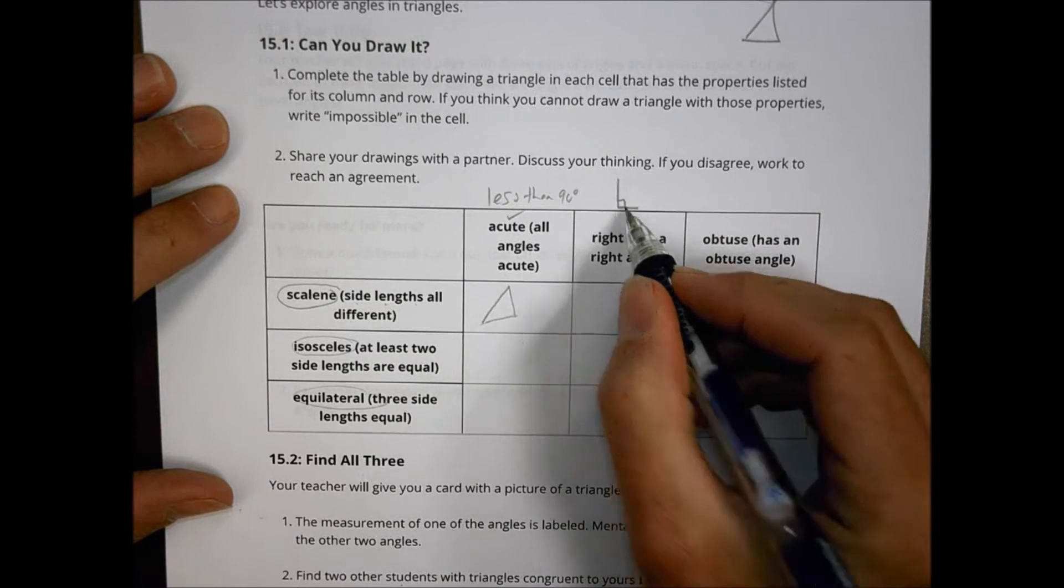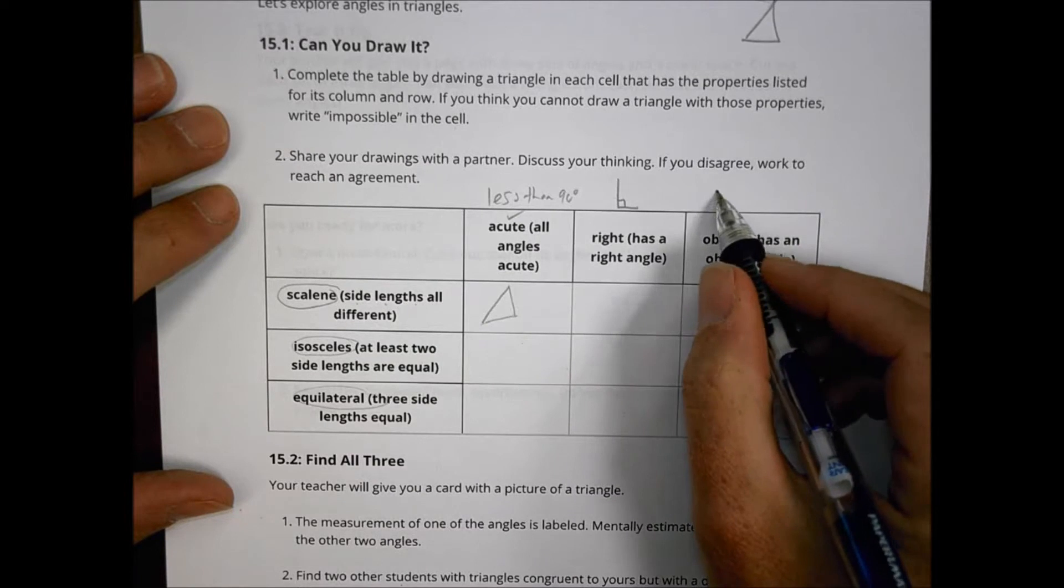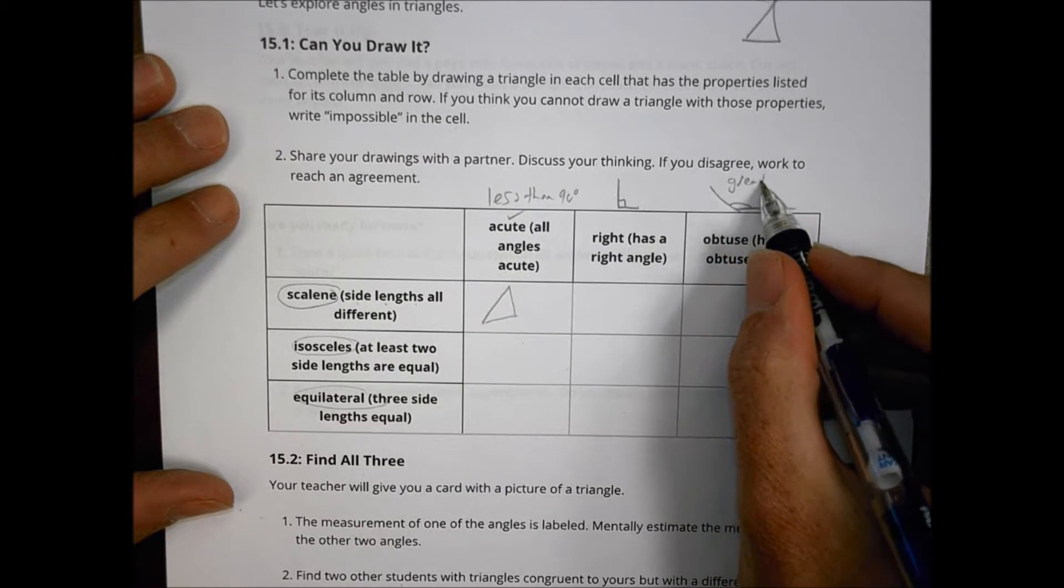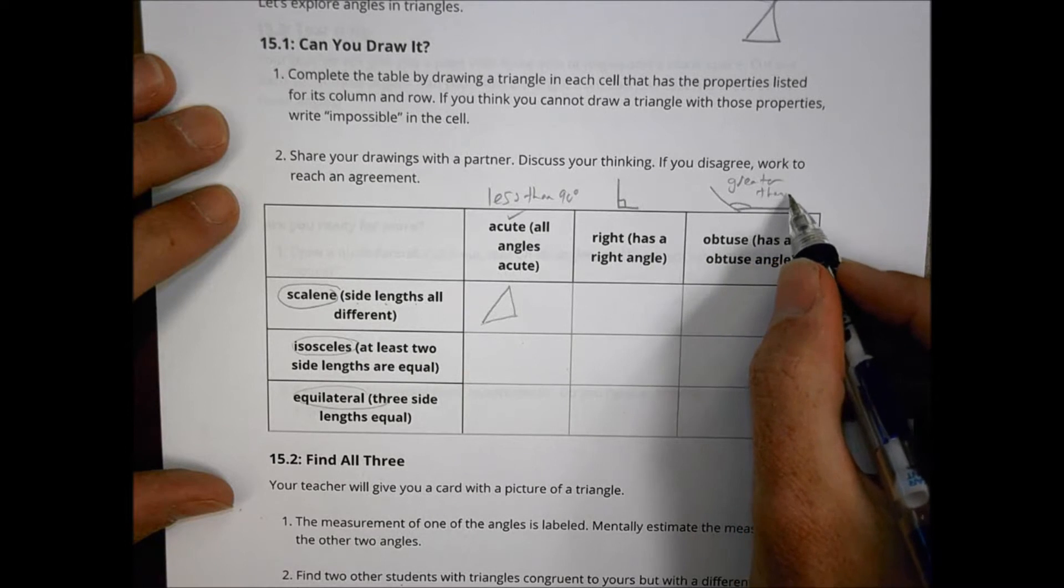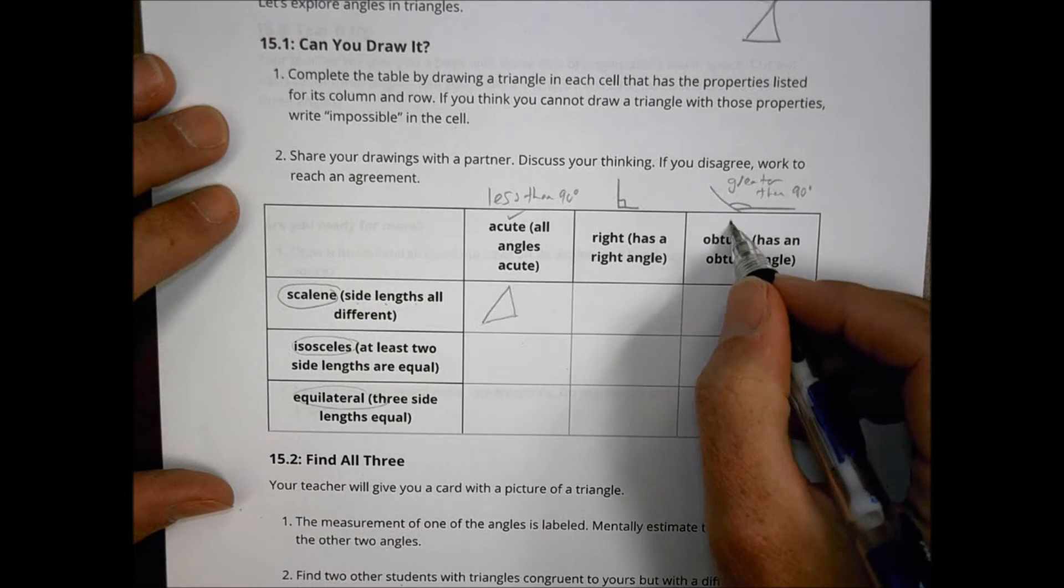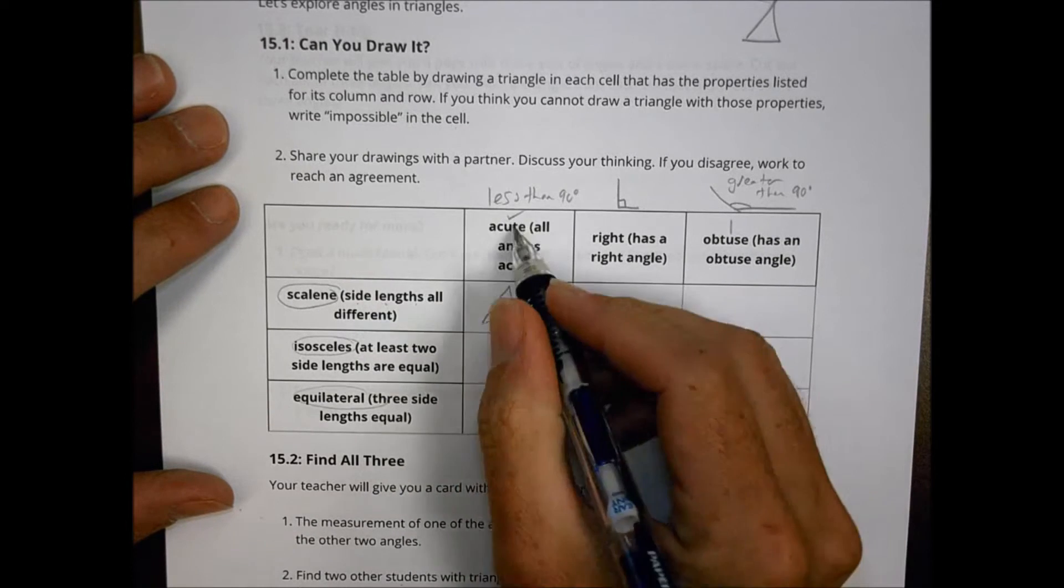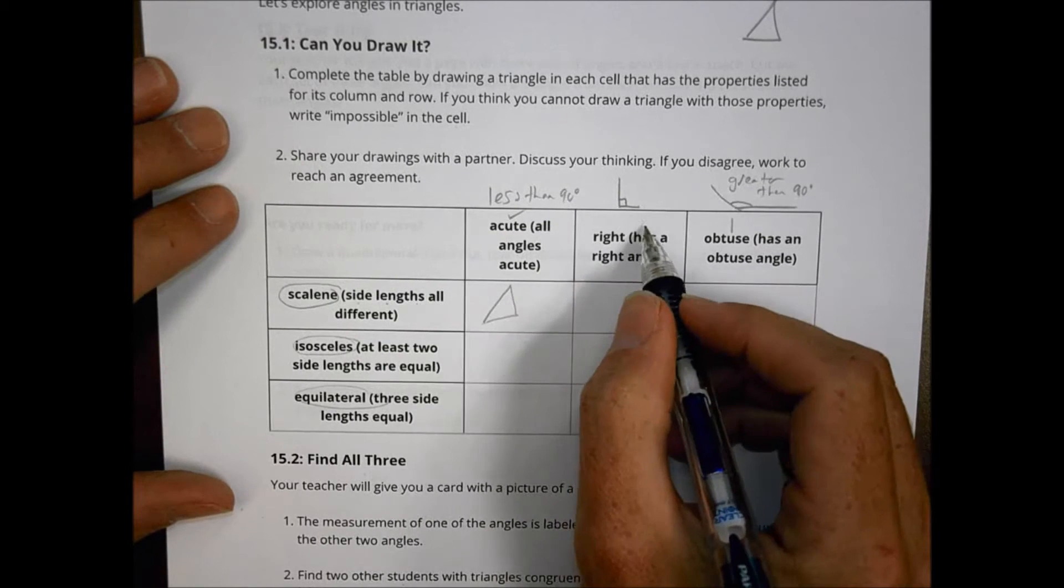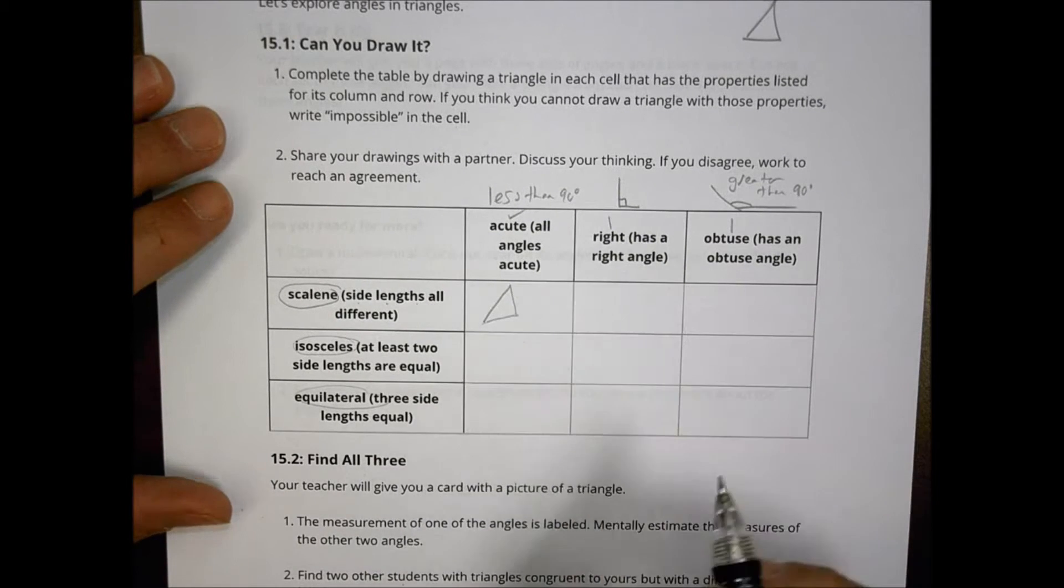For a right angle, that means it's going to have at least one right angle within it, and obtuse is going to be greater than 90 degrees. And that doesn't mean every angle. It just means one of them is going to be greater. And in this case here, all acute. But an obtuse one, a right one's only going to have one of those there. Otherwise, it won't be a triangle.